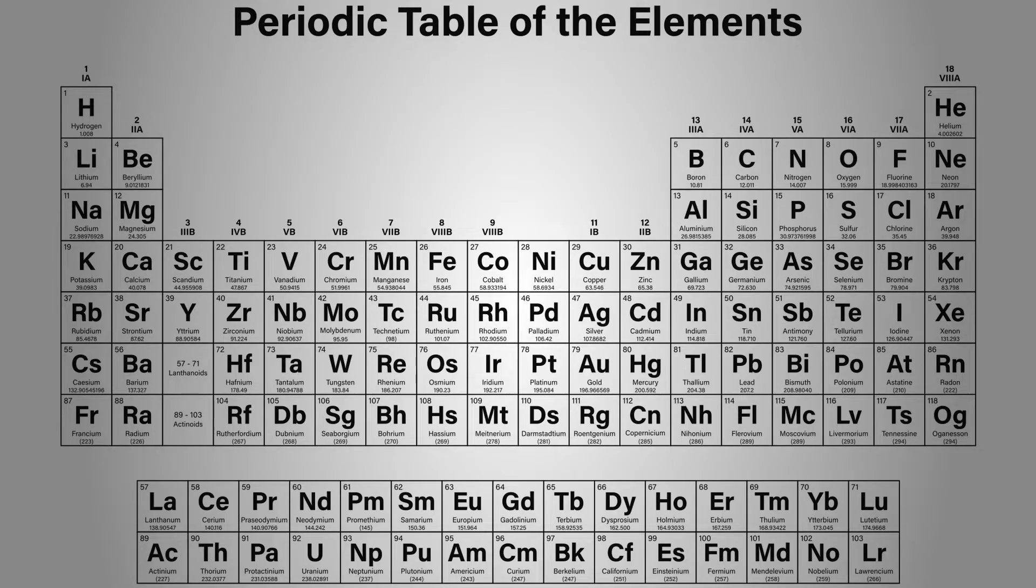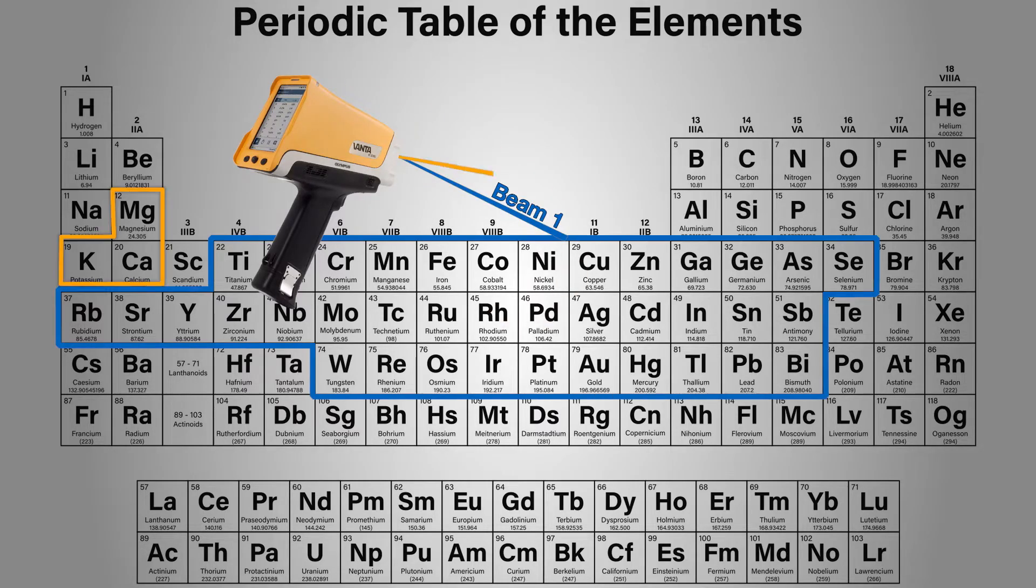Sure. What's a beam or a beam setting? Using different beams allows us to optimise the instrument for different parts of the periodic table. A beam is comprised simply of the voltage of the X-ray tube, the current across the anode of the X-ray tube